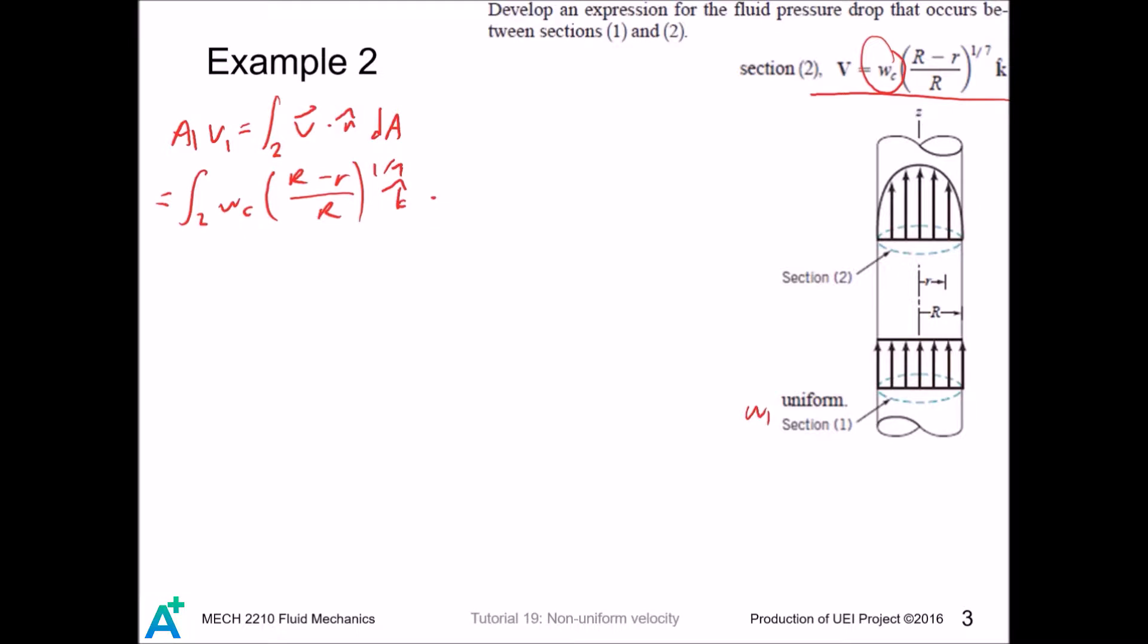At surface 2, the normal vector points this way. That is, the normal vector is k. So this becomes 1. Now the integral becomes an area integral. To do this, we draw section 2 a thin ring here. So that the ring has radius of r, and its area is dA equals 2 pi r dr, where dr is the thickness of the ring. And the radius goes from 0 to the radius of the section. And we substitute in dA.